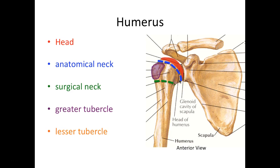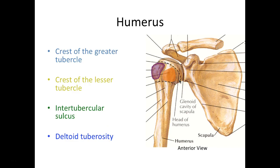The greater tubercle is larger and located more laterally posterior, while the lesser tubercle is more anterior. Each of these tubercles creates a crest moving downward — a crest is more like a ridge. From that bump a ridge is created, and if we have two ridges — one with our greater and one with our lesser tubercle — we get a groove created in the middle, which we call the intertubercular sulcus. Inter meaning between, tubercular referring to our tubercles, and sulcus meaning groove — so this is the groove between the two tubercles.